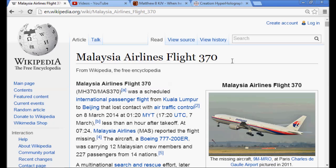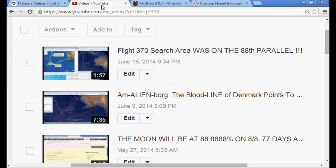March 7th is the day that it was in the United States when it was March 8th in Malaysia. So we know now why 370 went missing on 3-7 and on the 88th parallel near Australia.